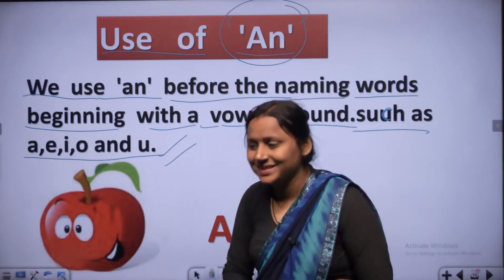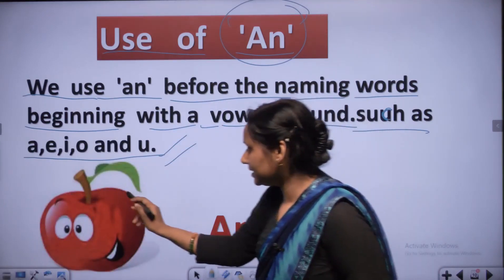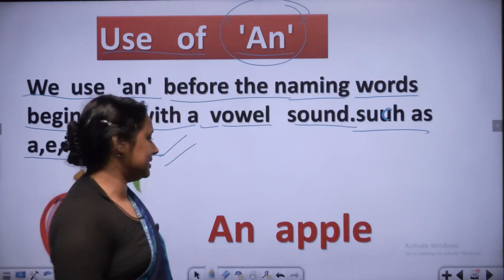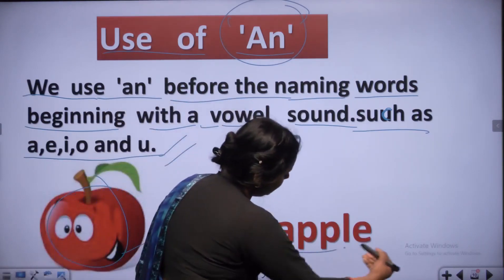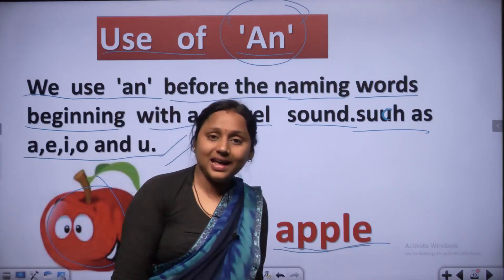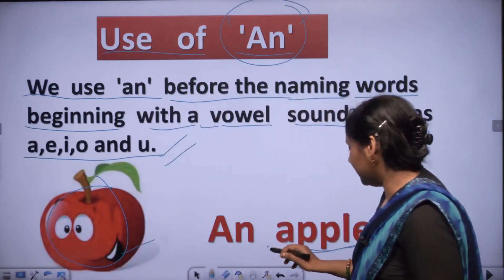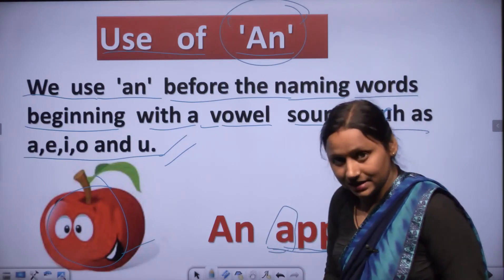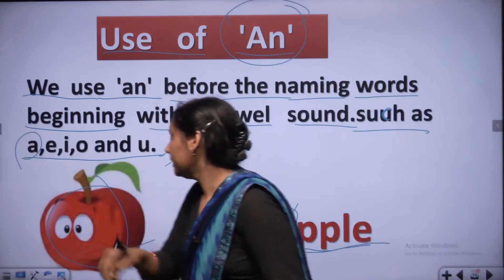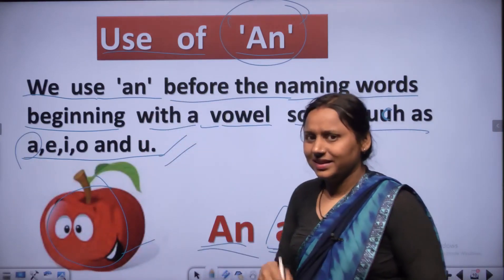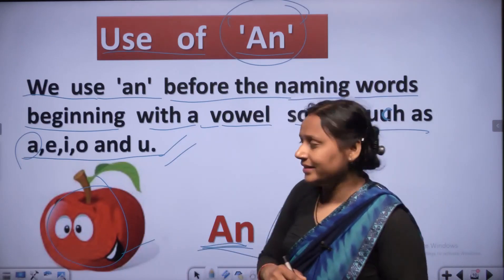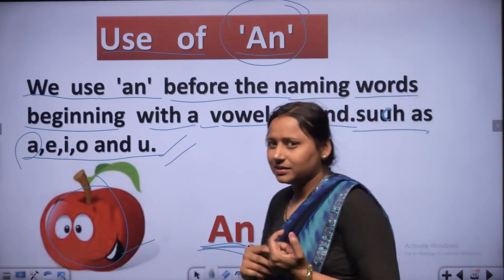Look at the example. This is the picture of a red color apple. Spelling of apple: A, double P, L, E. Apple. First letter is A. A is a vowel, so we use AN - an apple.